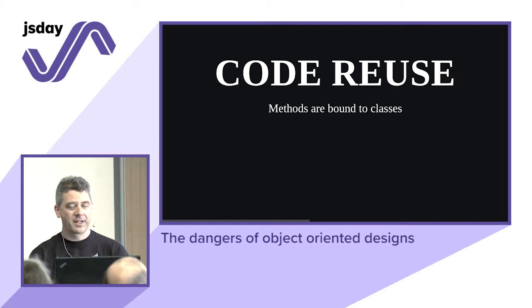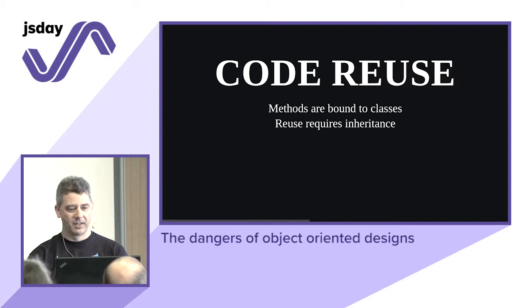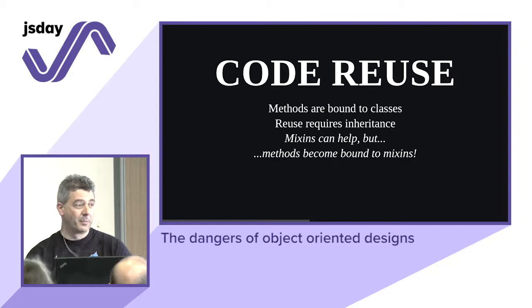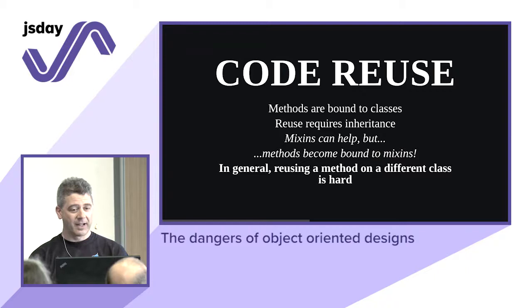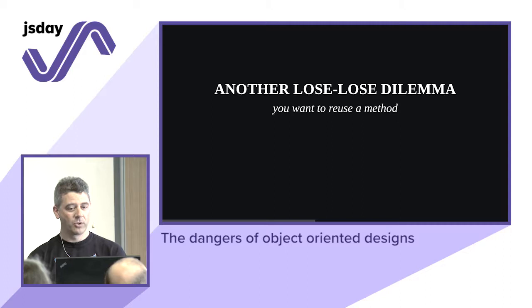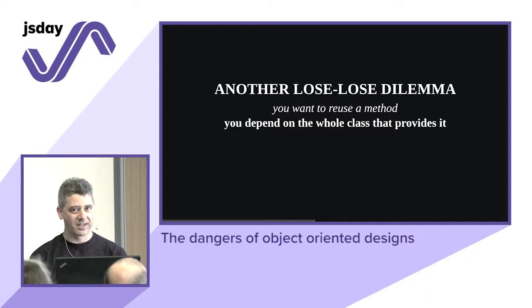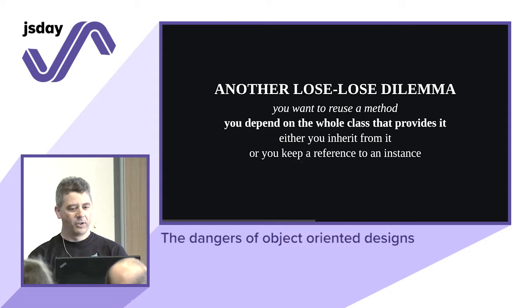Code reuse: methods are bound to classes. You define state inside classes and methods to work on that state. Reuse essentially requires inheritance because the method is bound to the class. Mixins can help but the method is still bound to the mixin. Reusing is hard — you're stuck in a lose-lose dilemma. To use a method you need the whole class. You either inherit or keep a reference to an instance — either way, you still have the dependency.